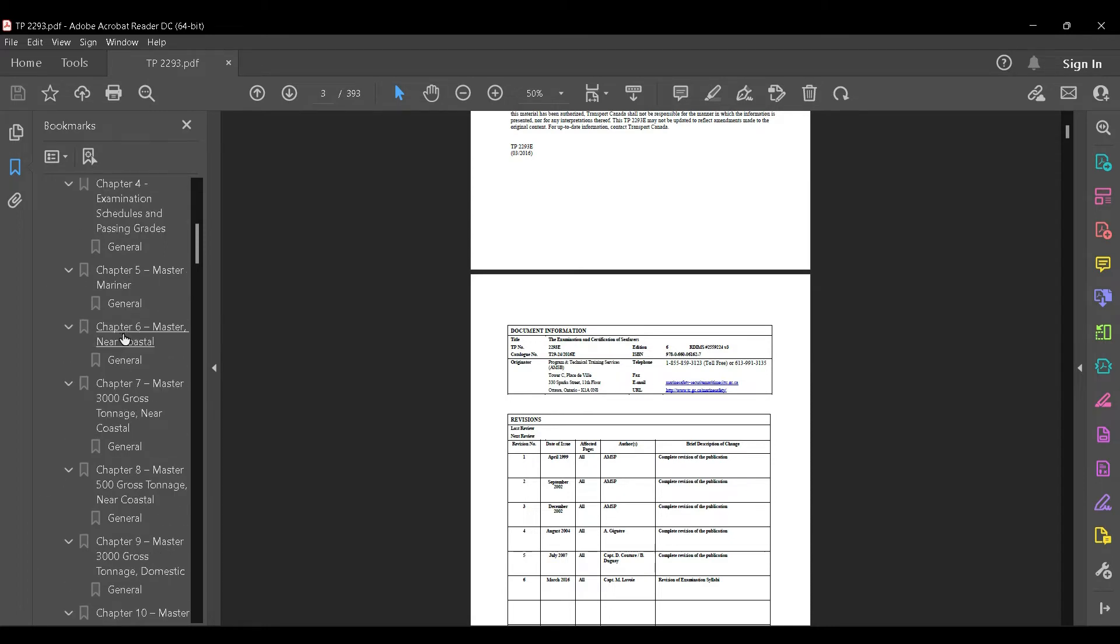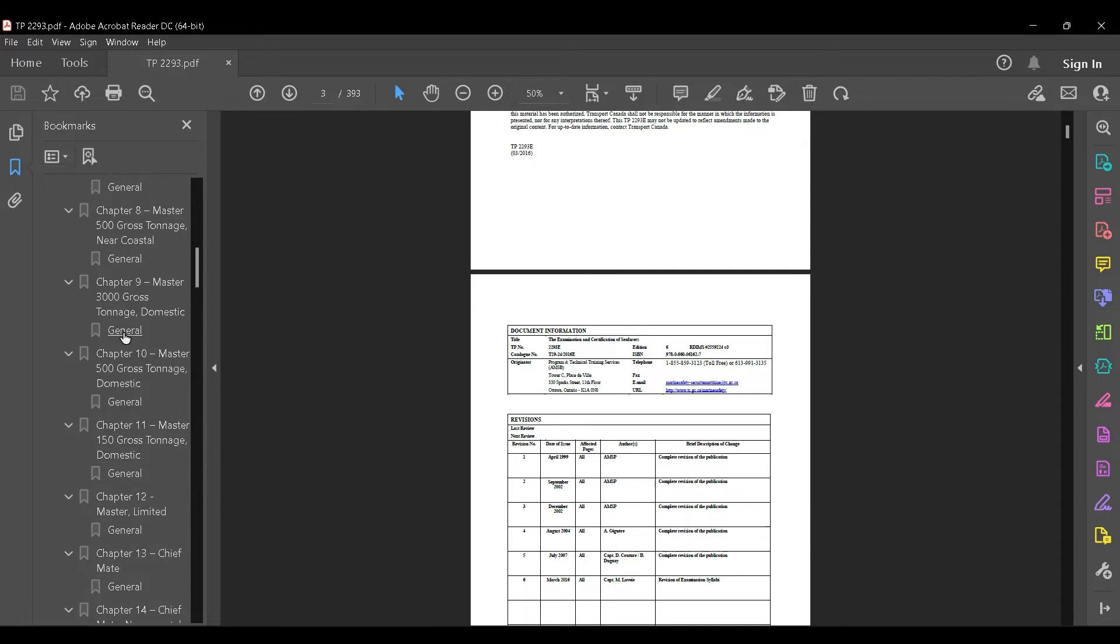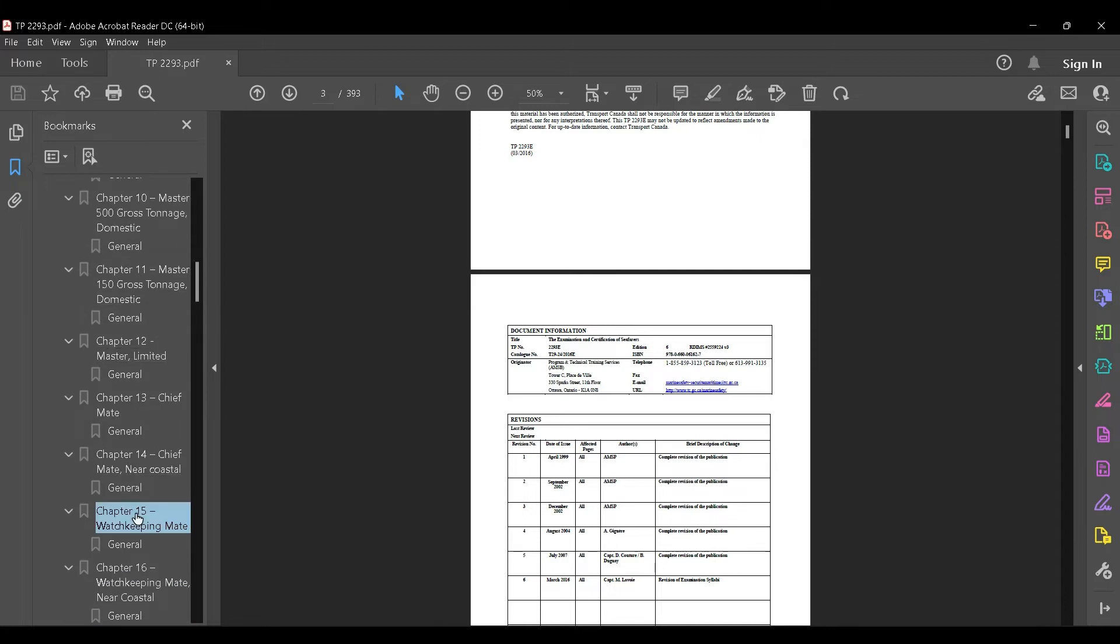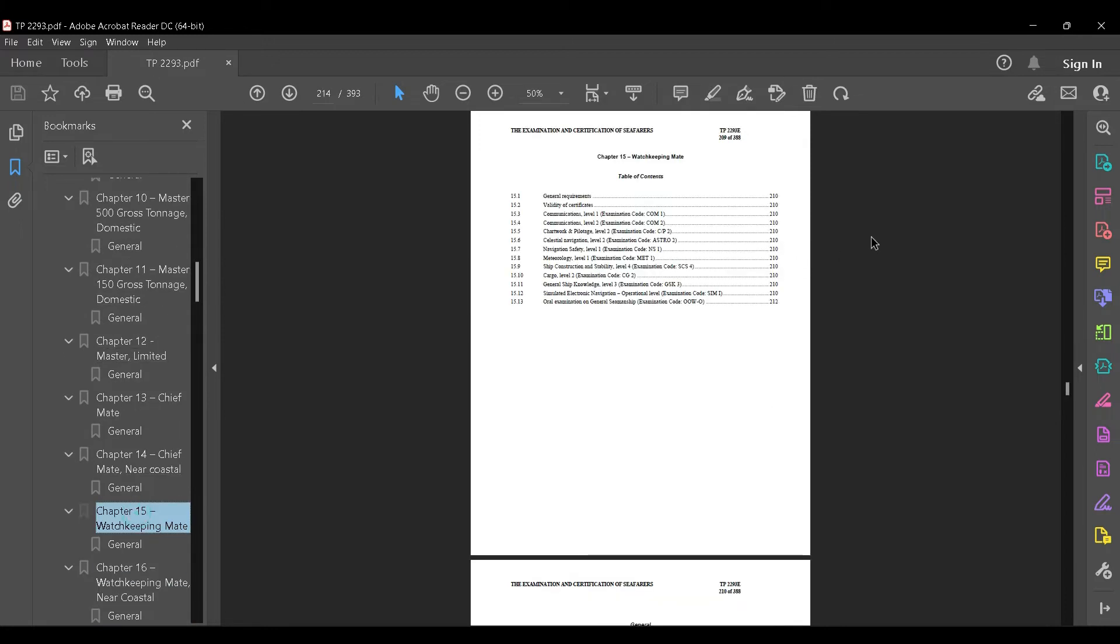In my case, I'm working towards the Watchman May Certificate of Competency, so I go to the Table of Contents on the left-hand side. Chapter 15 lists all the exams that are required for this. Going through the list, the one with the topic today is SCS-4, Ship Construction and Stability Level 4.